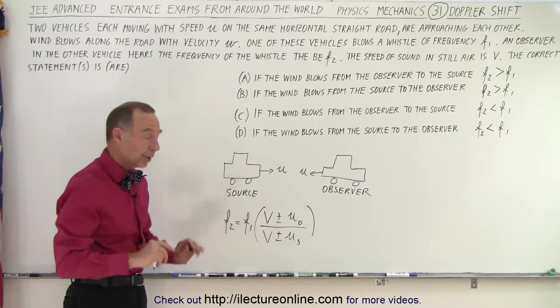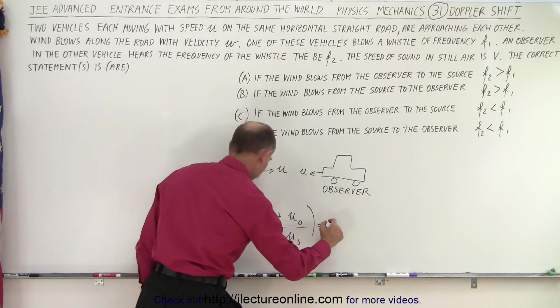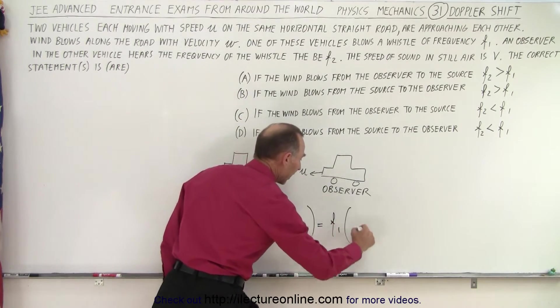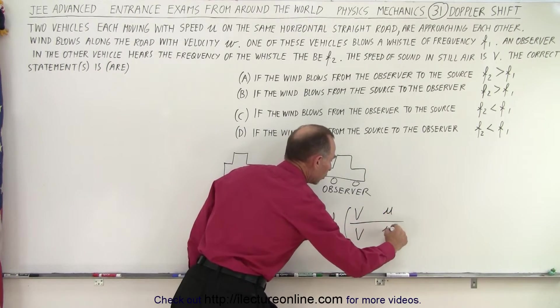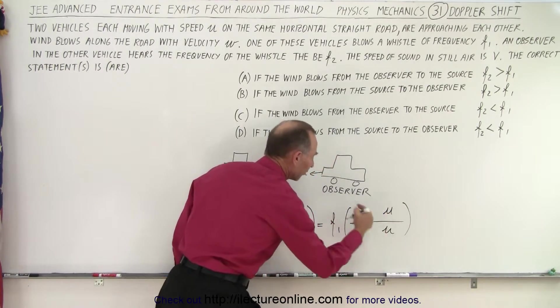But how do we determine the plus and minus? Well again, let's leave the wind out of it for a moment and rewrite this as F1 times V plus or minus U divided by V plus or minus U. So now we need to determine the signs.